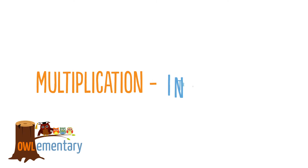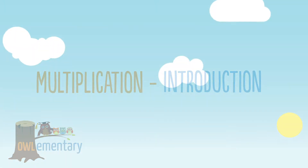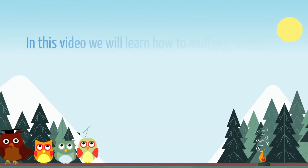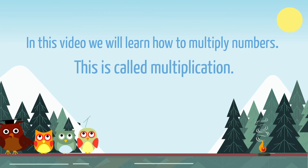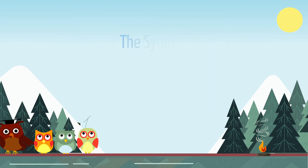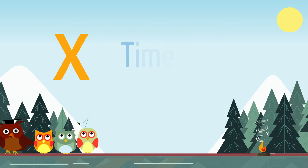Introduction to Multiplication. In this video, we will learn how to multiply numbers. This is called multiplication. The × symbol tells us we have to multiply the numbers. We read the × as times.